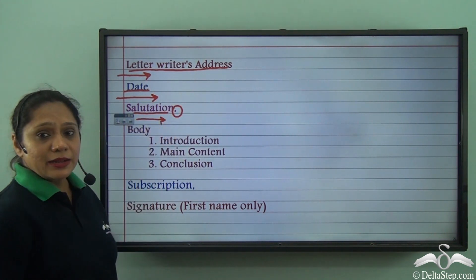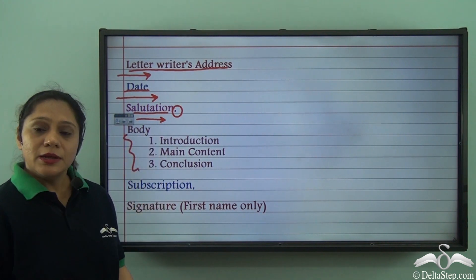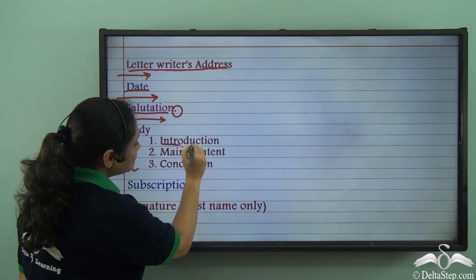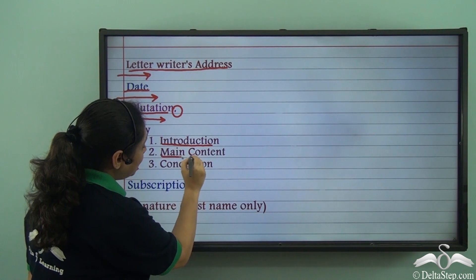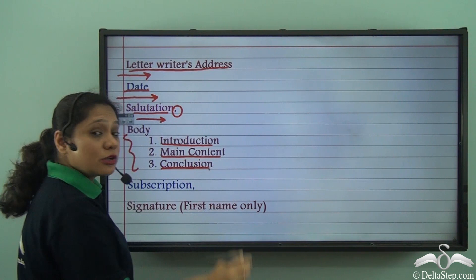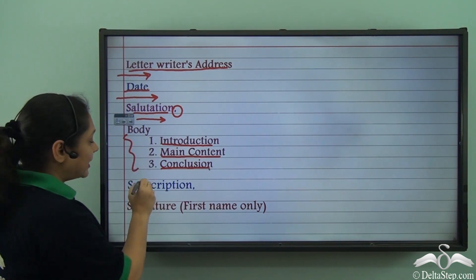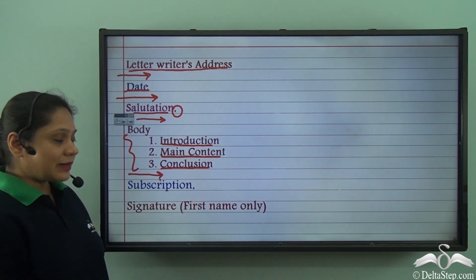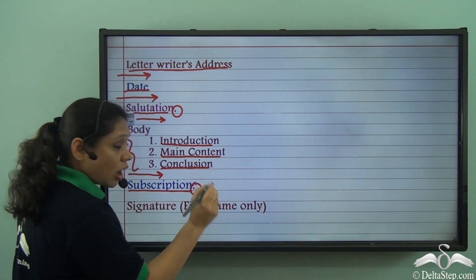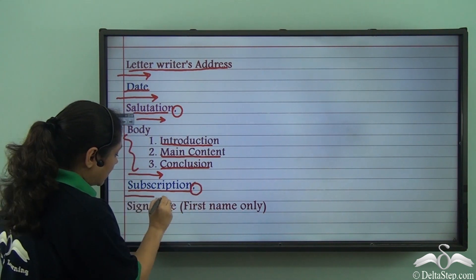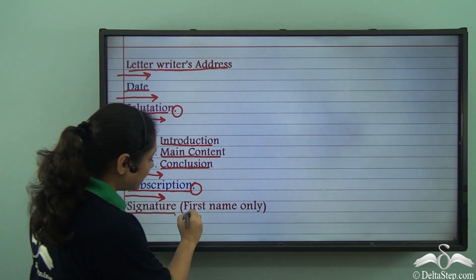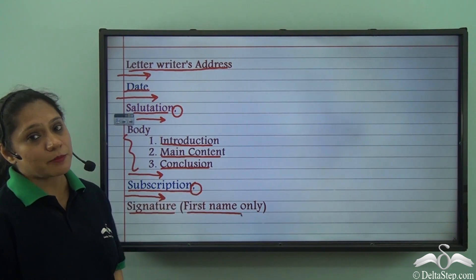Then we leave a blank line followed by the body of our letter. The body is written in paragraphs — the first paragraph is the introduction, the second paragraph has the main content, and the third paragraph is the concluding paragraph. After the body, we leave a blank line and write the subscription followed by a comma. Then we leave another blank line to give our signature, which is usually the first name because this is an informal letter.